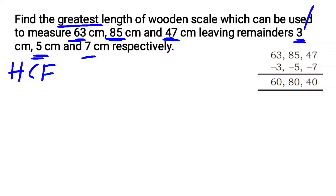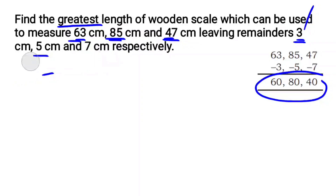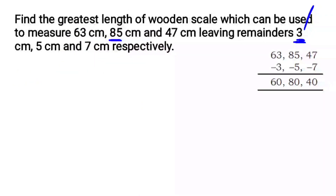We subtract the remainders from each measurement. 63 minus 3 is 60. 85 minus 5 is 80. 47 minus 7 is 40. Now we find the HCF of 60, 80, and 40.